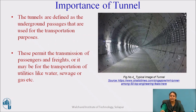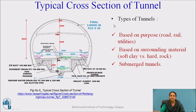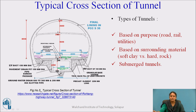Tunnels are also very important for transportation. They permit the transportation of passengers and freight, or for utilities like water, sewage or gas. This figure shows the typical cross section of a tunnel. You can observe various parts of the tunnel. First, a drill is made into the hill where the tunnel is to be constructed, then facilities for drainage, electricity are provided, and stability is given by providing lining. PCC means plain cement concrete.